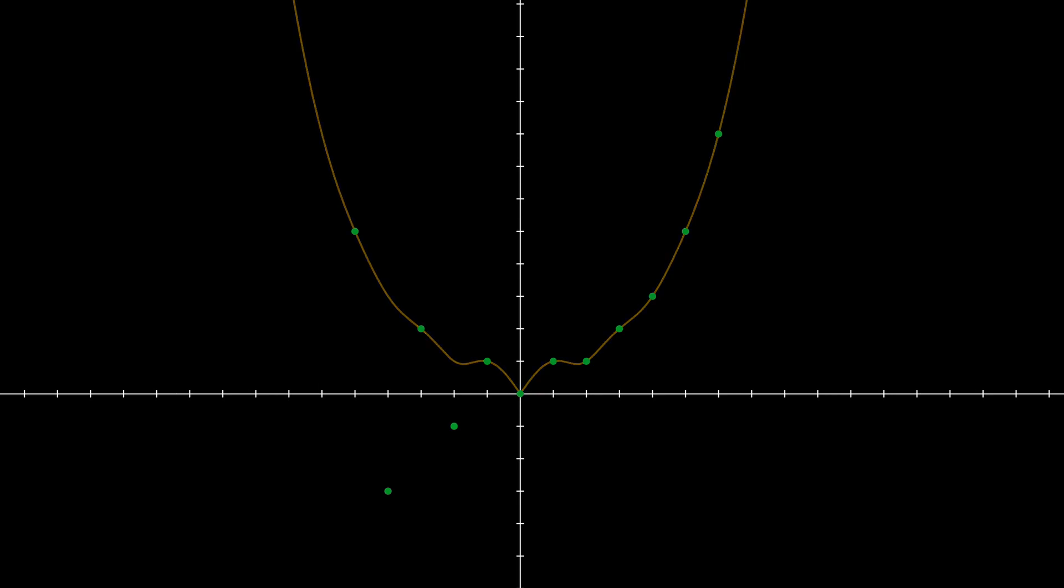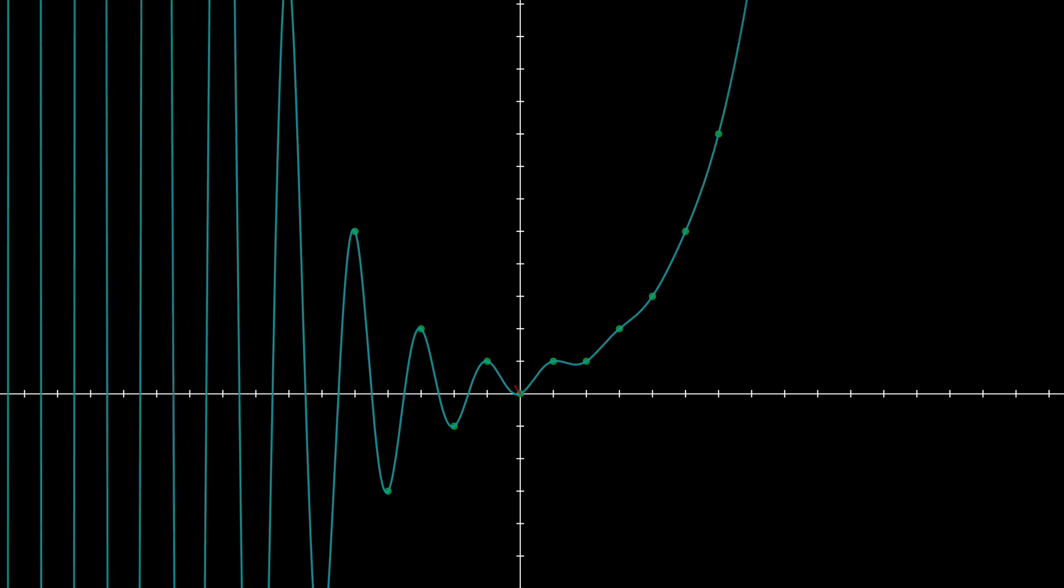Instead, we can have the output axis represent the real part of our result. We can even plot just the imaginary part. The blue line represents the real part, and the red line represents the imaginary part.